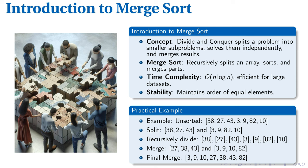Consider the example array: 38, 27, 43, 3, 9, 82, 10. Initially, it's split into [38, 27, 43] and [3, 9, 82, 10]. Further splits yield individual elements: 38, 27, 43, 3, 9, 82, 10.